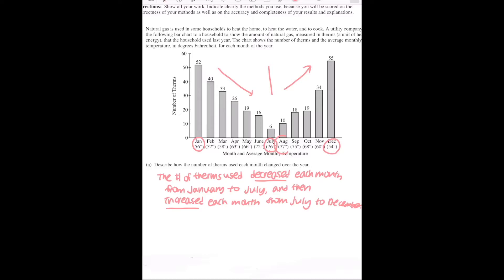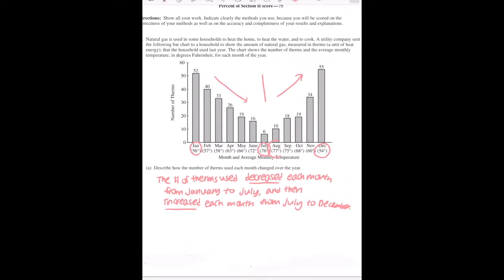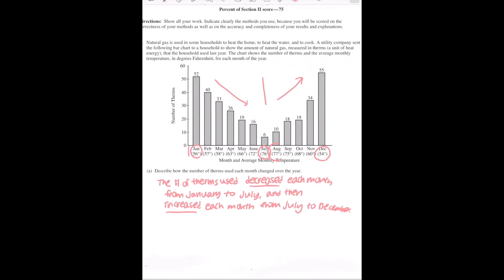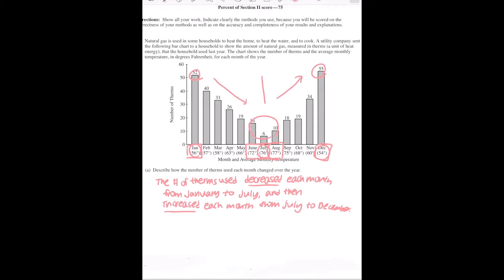And this is not enough, because you need to say that there is a general trend. You see that in January and in December, it's relatively high. You use many therms, maybe because it's winter, maybe because it's cold. But compared to that in months like June, July, August, like the summer, you relatively use smaller amount of therms, right? You also need to say that in your answer.